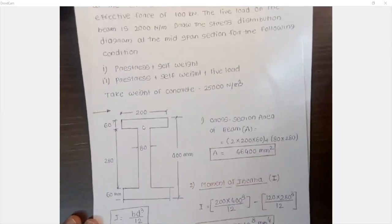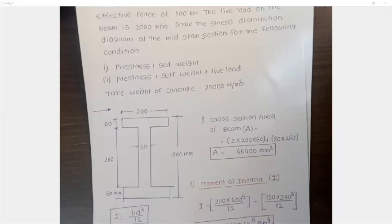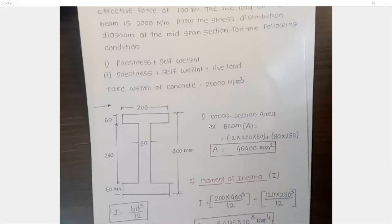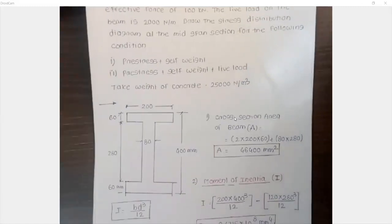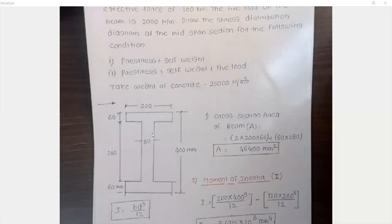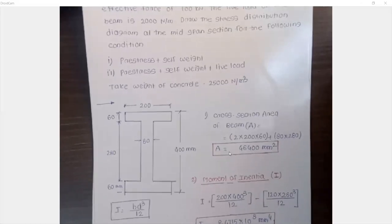The beam has a flange width of 200 mm, flange thickness of 60 mm, and overall depth of 400 mm. Before calculating stresses, we first calculate the cross-sectional area. Cross-sectional area is 2 × 200 × 60 for the two flanges, plus 80 × 280 for the web area — where 280 is the depth of the web. The total area comes out to 46,400 mm².